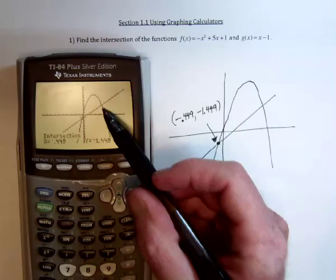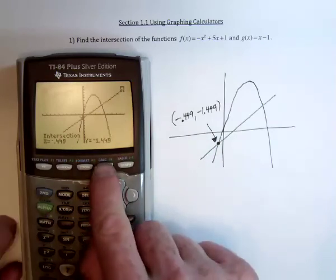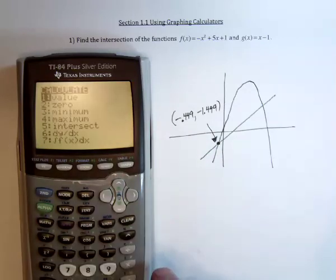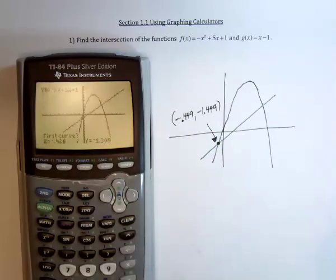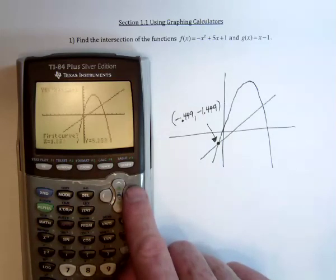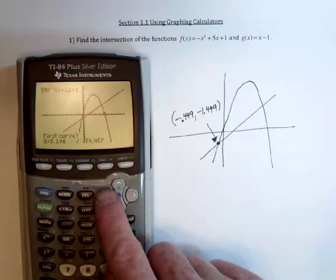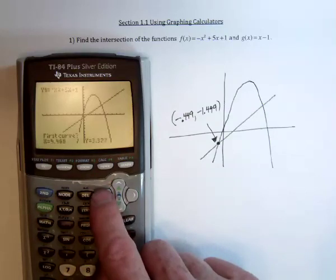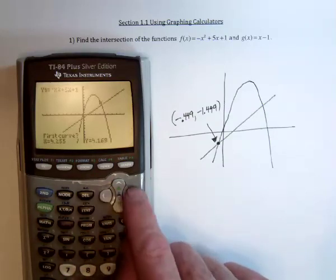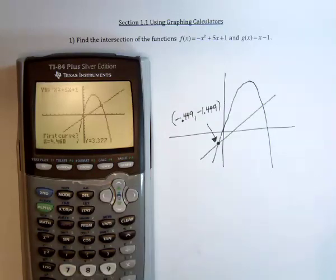All right. Now let's find this other intersection point. So 2nd calculate, number 5 for intersect. And now use the arrow key to move over to that other intersection point. A little too far. Back up. Okay. And then hit enter three times in a row.